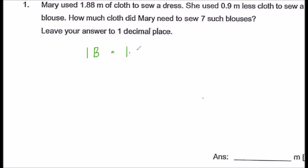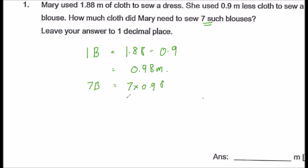So that would be 1.88 minus 0.9. You will have 0.98 meters. And she wants to sew 7 such blouses, so 7 times 0.98, and you will get the answer of 6.86 meters. So that's the answer.